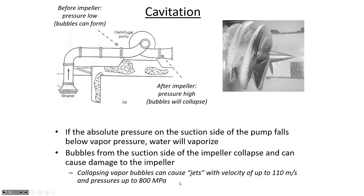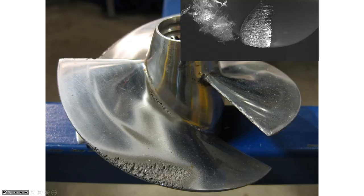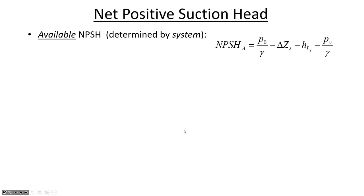Cavitation can cause localized pressures of up to 800 megapascals, which is very high. This shows pitting and damage on an impeller blade — it's not chemical attack, it's just vapor bubbles forming and collapsing on the blade. To prevent this, we need to know the difference between how much NPSH is required by the pump and how much net positive suction head is available in the system.